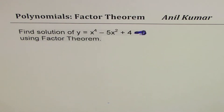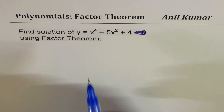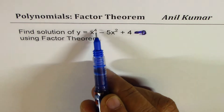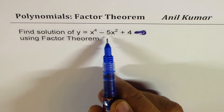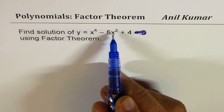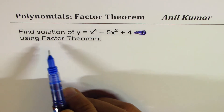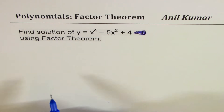I'm Anil Kumar, sharing with you a question from my subscriber. Let me thank all the subscribers for posting excellent questions. The question here is: find the solution of y equals x to the power of 4 minus 5x squared plus 4, using the factor theorem.